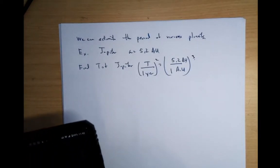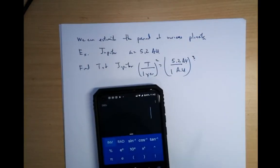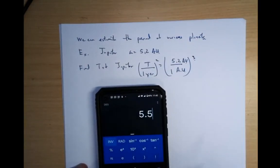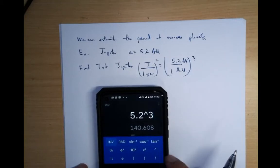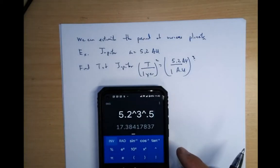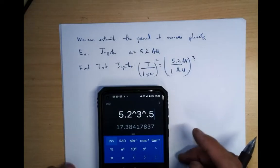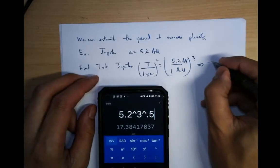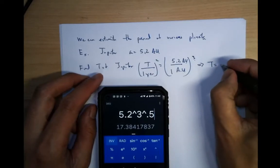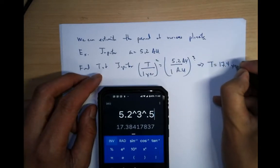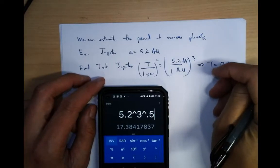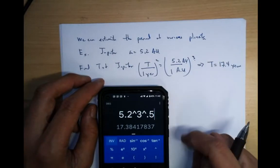Let's just clear everything out. So 5.2 to the third power, that's 140, the square root of that. So I'll take the square root of that 0.5. So this gives me T is equal to 17.4 years. Did I do that right? That's 5.2 cubed by 0.5. That's right.